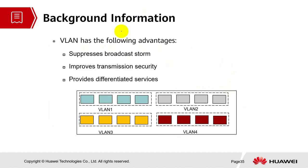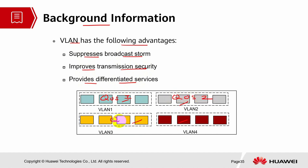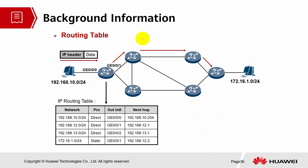Background information on VLAN: VLAN advantages include suppressing broadcast storms, improving transmission security, and providing differentiated services. Each color in the diagram represents a different VLAN, which may carry a different QoS type. There are four types of QoS, each carried by a different VLAN.